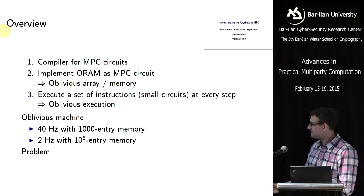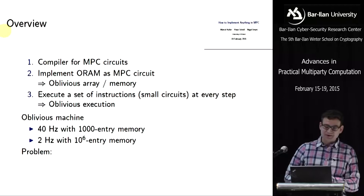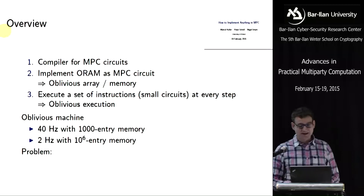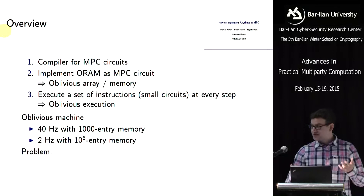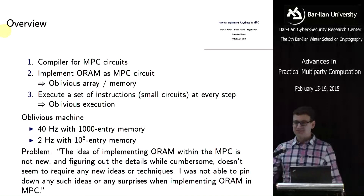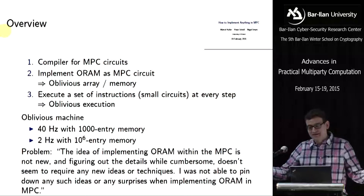We have implemented this and run it, and as you can see it is not particularly slow but not particularly fast either. With a lower memory of 1,000 entries we are at 40 Hz; with a bigger memory at a million entries it's just two Hz — that's a bit far away from your desktop CPU. That's obviously not nice, but it is a lot of work, and you program your days and nights away, and in the end it's apparently not so surprising that you can do this.